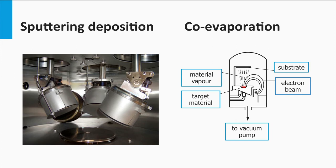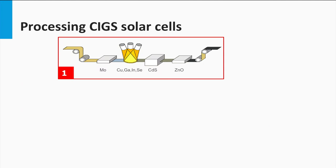The second approach is sputtering and co-evaporation on a substrate at room temperature. The deposited films on the cold substrate are thermally annealed in presence of a selenide vapor to form the final CIGS structure.